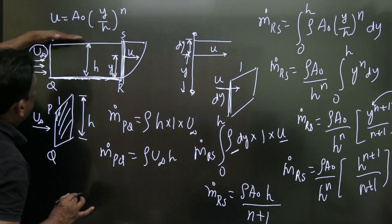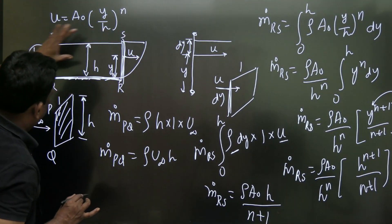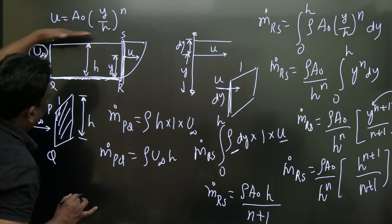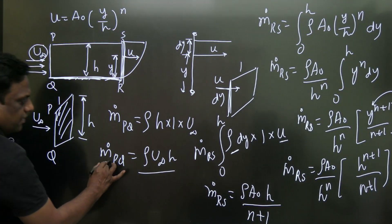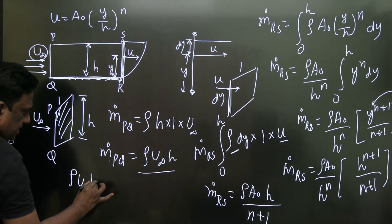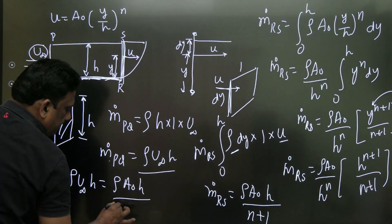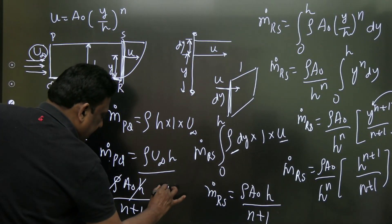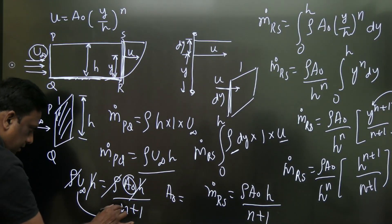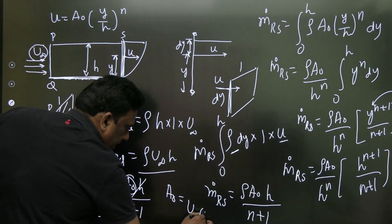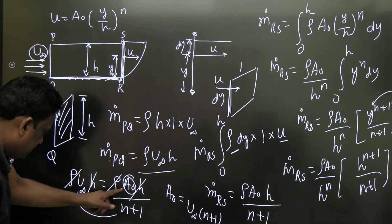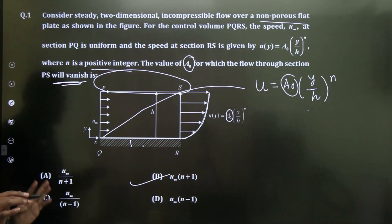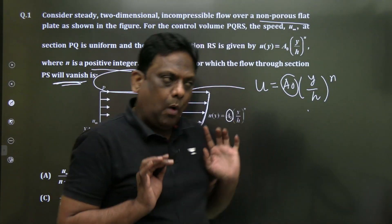For the flow through PS to vanish, mass flow rate through PQ must equal mass flow rate through RS. So ρ·u∞·h = ρ·a₀·h/(n+1). Cancelling ρ and h from both sides gives a₀ = u∞·(n+1). Let us verify that option is available — yes, a₀ = u∞(n+1) is the answer.